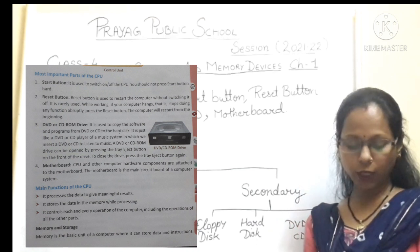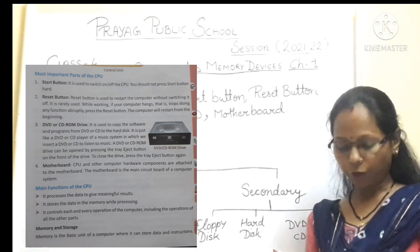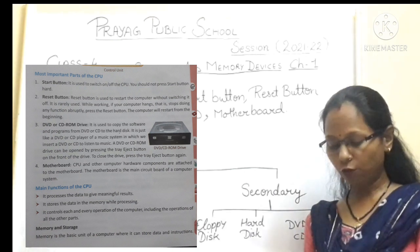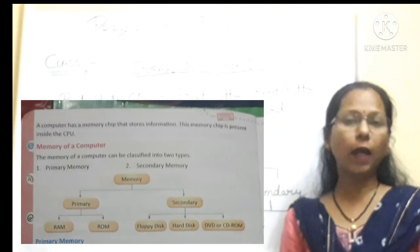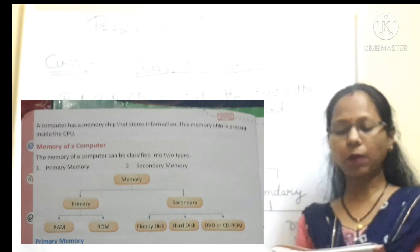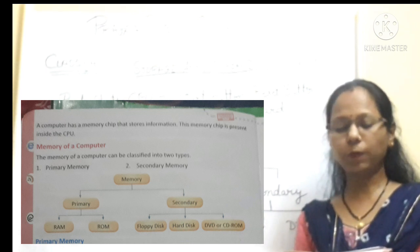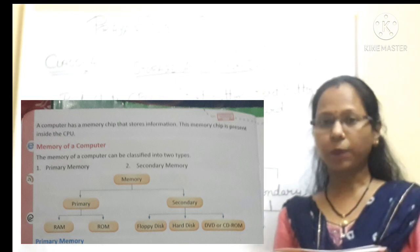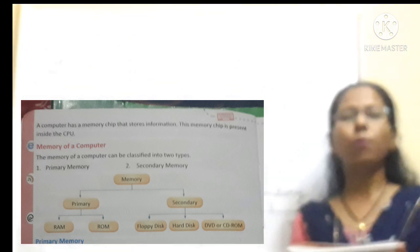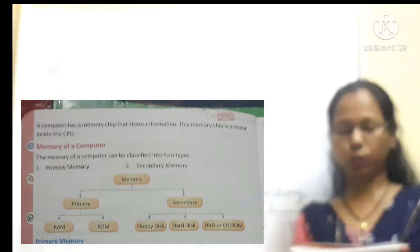Next topic is memory and storage. Memory is the basic unit of a computer where it can store data and instructions. आपका data and instruction memory में store होता है. A computer has a memory chip that stores information, and this memory chip is present in the CPU. Memory chips लगी होती हैं जिनके अंदर आपका data store हो जाता है.